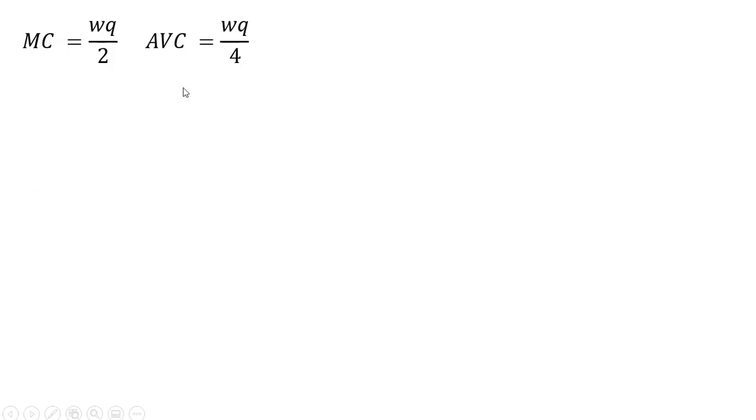Just rewriting our marginal cost and average variable cost. Now let's see what happens when the wage is $20. Plugging $20 into both equations, marginal cost now is going to be a steeper curve. It's going to be $10Q instead of $6Q. And average variable cost will also be steeper. It'll be $5Q instead of $3Q.